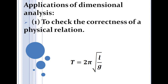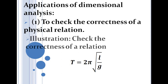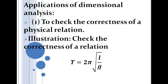Now let's go to the applications of dimensional analysis. The very first application is to check the correctness of a physical relation. We can check whether a physical equation is dimensionally correct or not using the principle of homogeneity of dimensions. Let's check the correctness of the equation for the time period of a simple pendulum: T = 2π√(L/g).